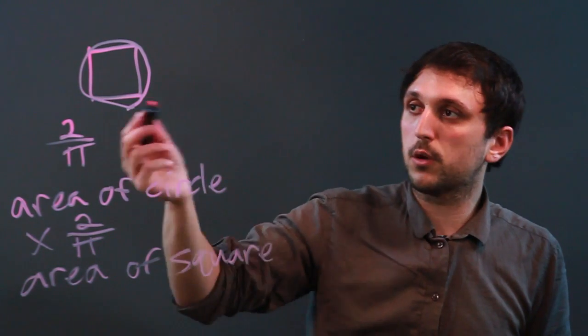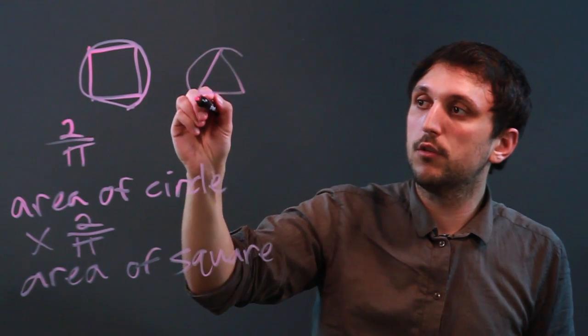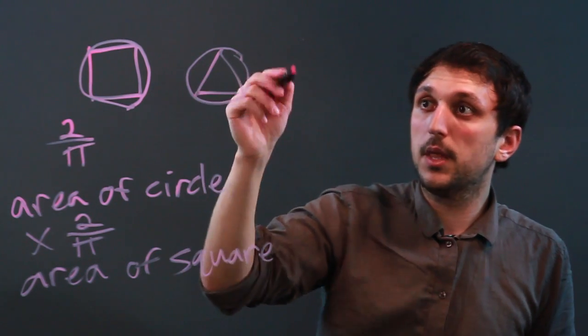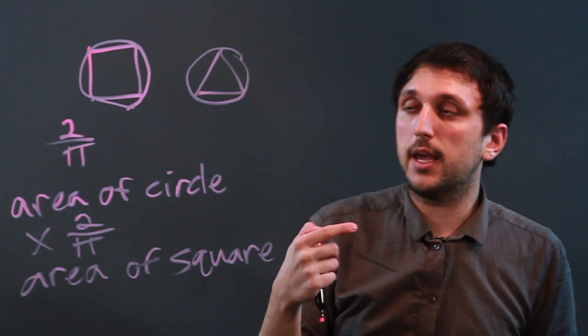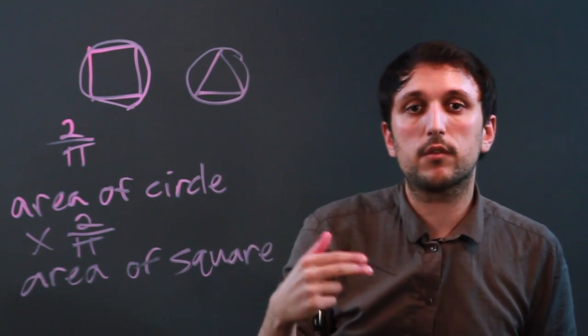Now, other shapes can be circumscribed as well. For example, a triangle can be circumscribed in the circle, as long as all three vertices touch it, and on and on. You can have a pentagon where all five vertices, a hexagon where all six, etc.